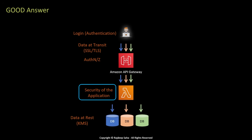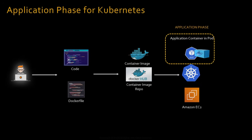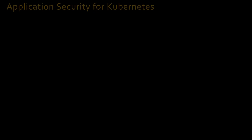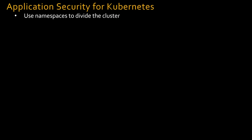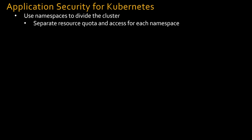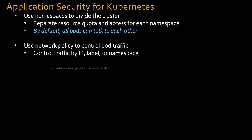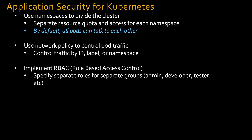I'll go over an example of application security using Kubernetes, which is super hot right now. Generally in Kubernetes, you have your application container image running within a pod, and that pod is running in the data plane, which is Amazon EC2. Application security for Kubernetes will look like: use namespaces to divide the cluster and separate resource quota and access for each namespace. But for a multi-tenant cluster, by default all pods can talk to each other. Use network policy to control pod traffic — you can control traffic by IP, label, or namespace. Implement RBAC — role-based access control — specifying separate roles for separate groups such as admin, developer, tester, etc.